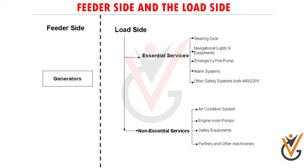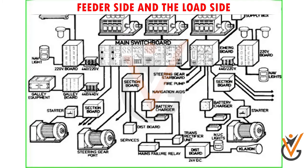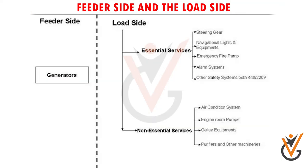Essential services include supply to navigational aids like radars, communication equipment, navigational lights, and steering gear motors. These essential services may be supplied directly from the main switchboard or via sectional boards or distribution boards. Non-essential services are those that do not affect the safety of the ship and personnel — for example, air conditioning compressors and fans.